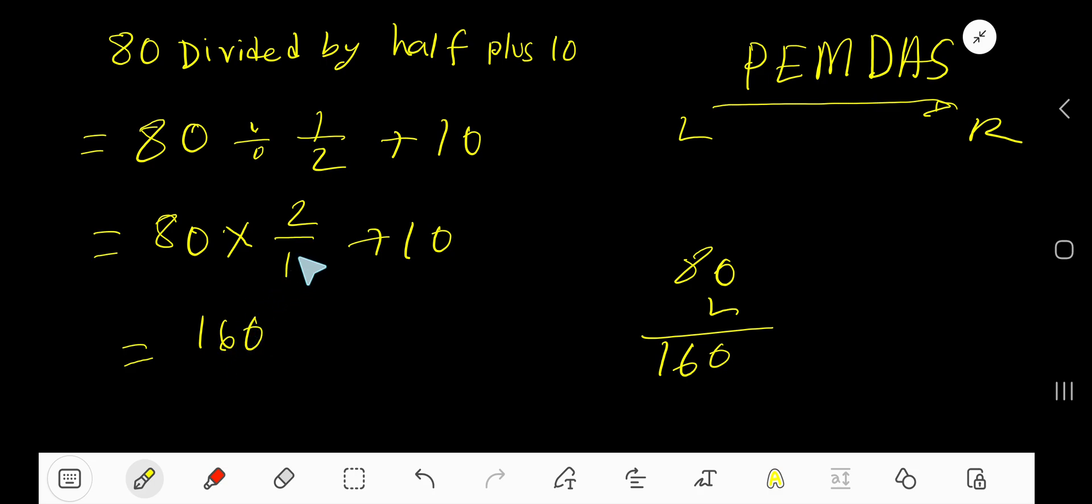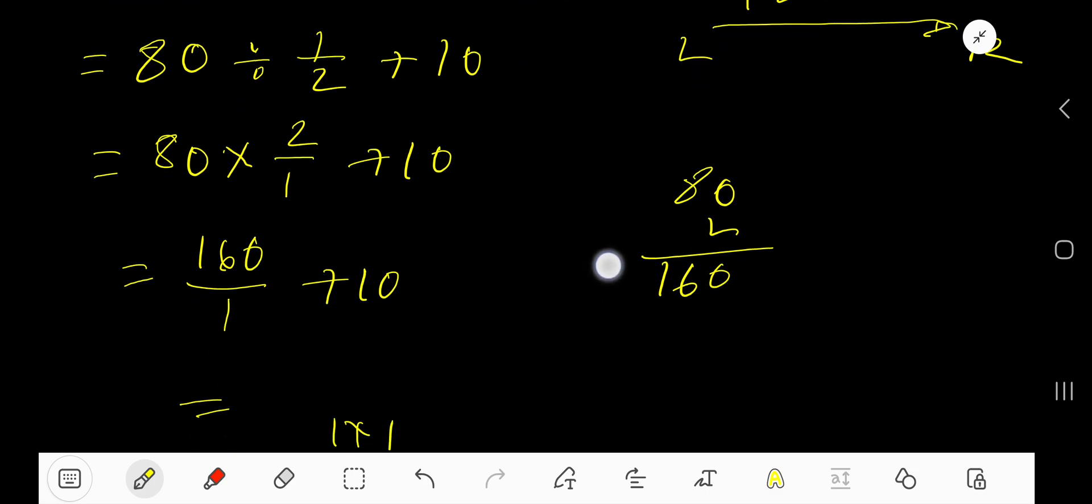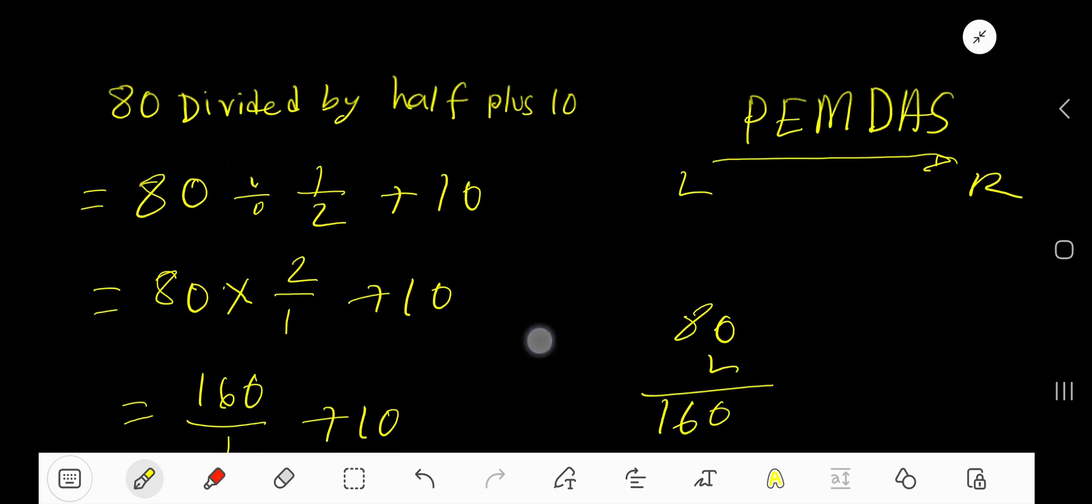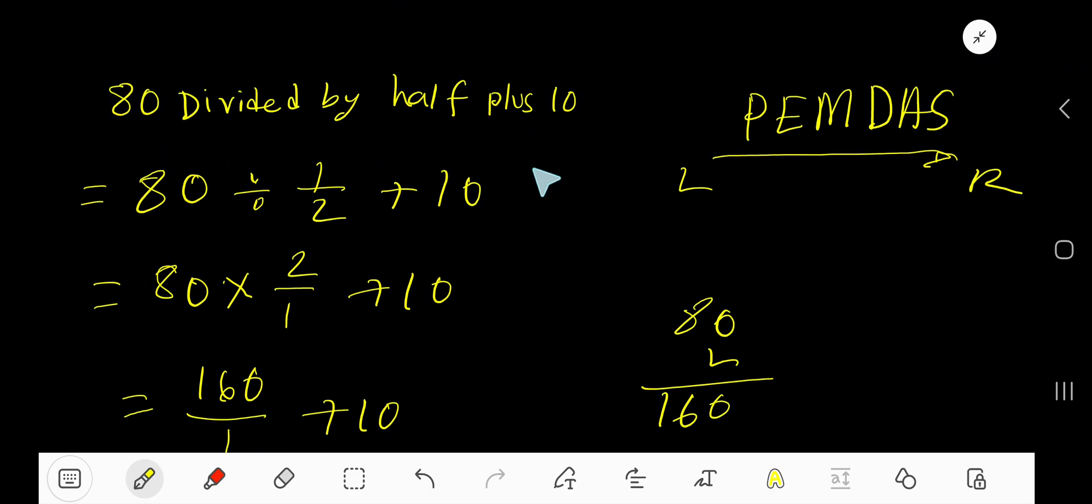Then divide by 1 means actually this number. So 160 plus 10. That is 170. So 170 is our answer.